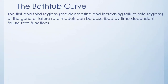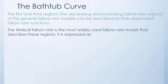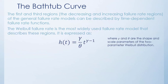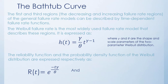The first and third regions — the decreasing and increasing failure rate regions of the general failure rate model — can be described by time-dependent failure rate functions. The Weibull failure rate is the most widely used failure rate model that describes these regions. It is expressed as λ(t) = (γ/θ) · t^(γ−1). When gamma equals 1, the Weibull hazard rate function becomes constant. When gamma equals 2, the resultant hazard function is linear with time and its probability density function becomes the Rayleigh distribution.